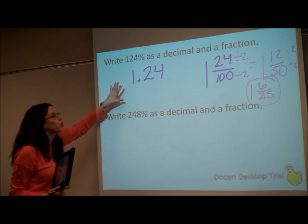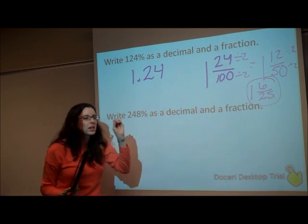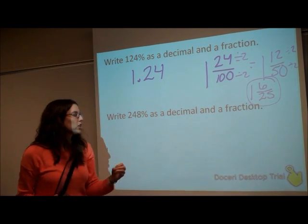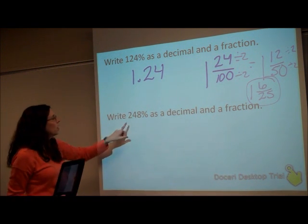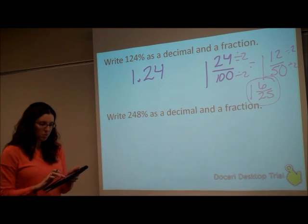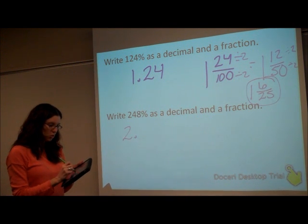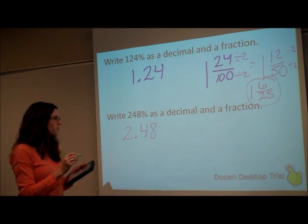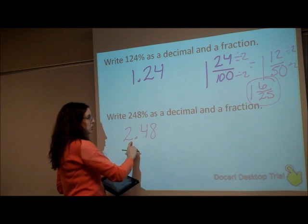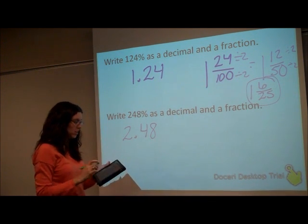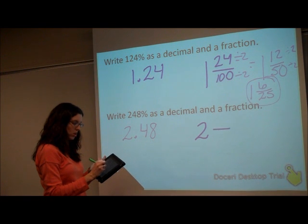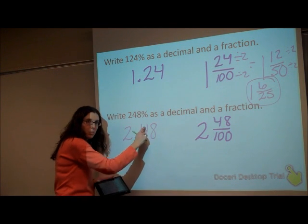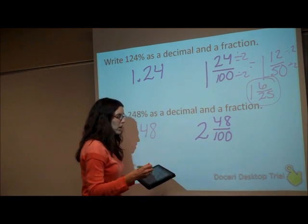I want you to try this one on your own. Look back at how we did this one, and think back to how we did decimals and fractions. When you get it finished, go ahead and press play and we'll check it. So 248% as a decimal would be 2.48. Then we need to change this decimal into a fraction. The 2 is our whole number, so it will be 2. We have 48 hundredths.